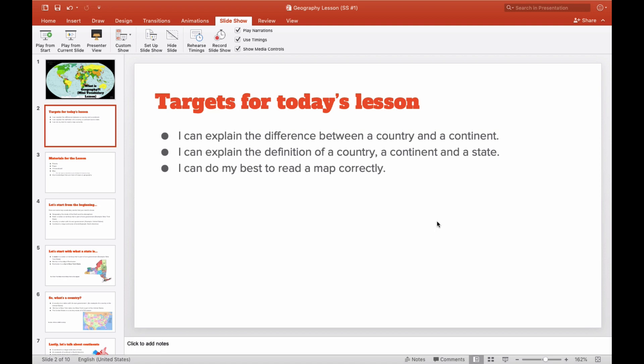So targets for today's lesson. I can explain the difference between a country and a continent. I can explain the definition of a country, a continent, and a state. And then last, I can do my best to read a map correctly. So I know country and continent kind of get mixed up sometimes just because they both start with C, but they're very different. So we're going to be focusing on that difference today.